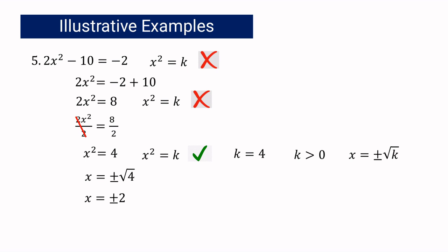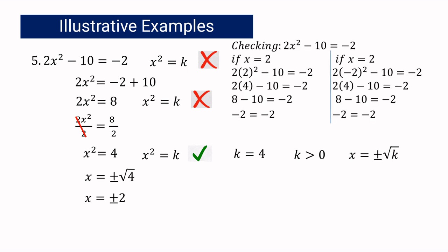To check: if x equals 2, then 2 squared is 4, and 2 times 4 is 8, so 8 minus 10 equals negative 2. If x equals negative 2, then negative 2 squared is also 4, 2 times 4 is 8, and 8 minus 10 is negative 2. Both solutions are verified.